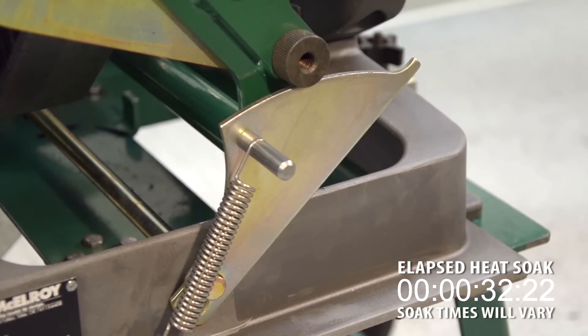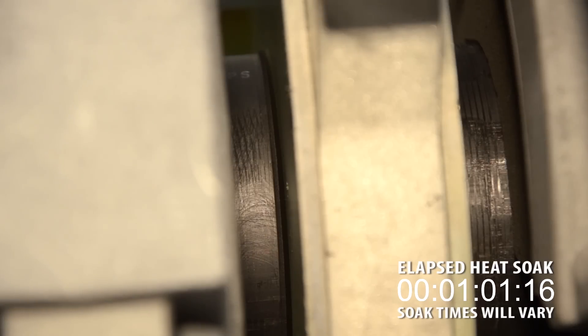Now with the pipe in the heat soak, it is important that no pressure is applied between the pipe and the heater. Just keep the pipe in contact with the heater. Any pressure will cause the heat to not properly penetrate the pipe. The heat soak will be complete when a minimum bead size of 1/16th of an inch is observed.